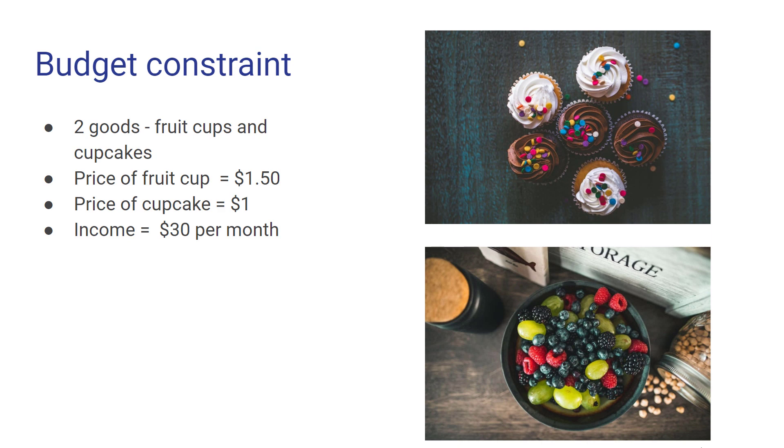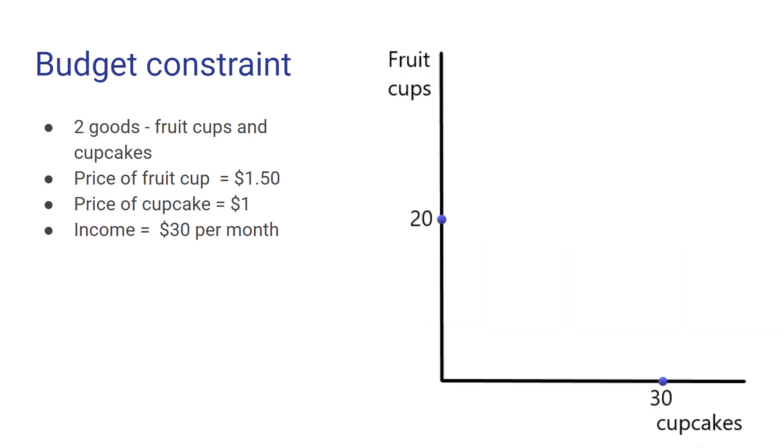If this child spends all of his income on fruit cups, then he has a total of $30 and each fruit cup costs $1.50, so the most that could be purchased is 20, which we get by just dividing the amount of money the person has to spend, their income, by the price of the good. So 30 over $1.50 is equal to 20 units. And if you buy 20 units of fruit cups at $1.50 each, you've spent your entire income of $30.